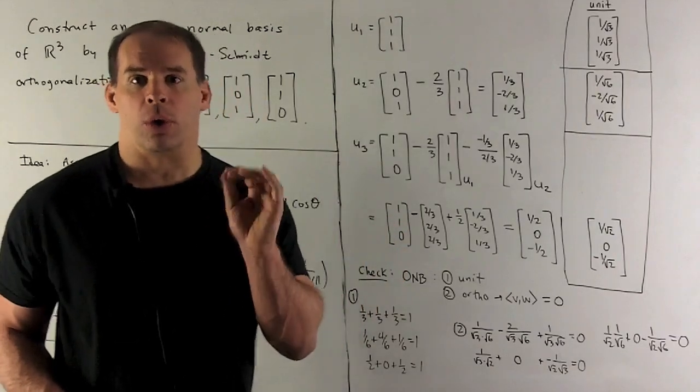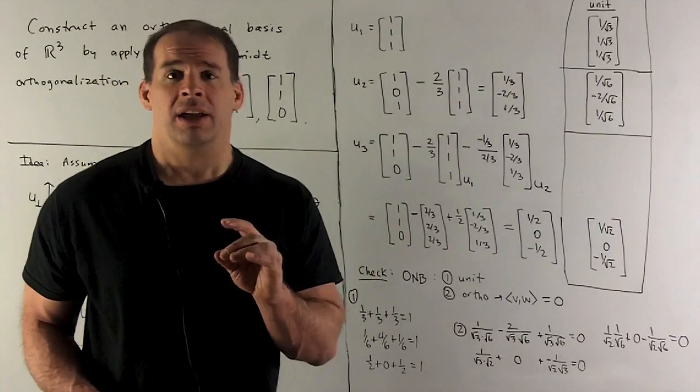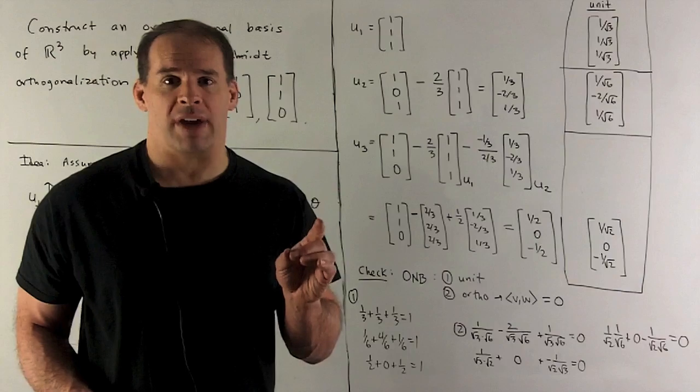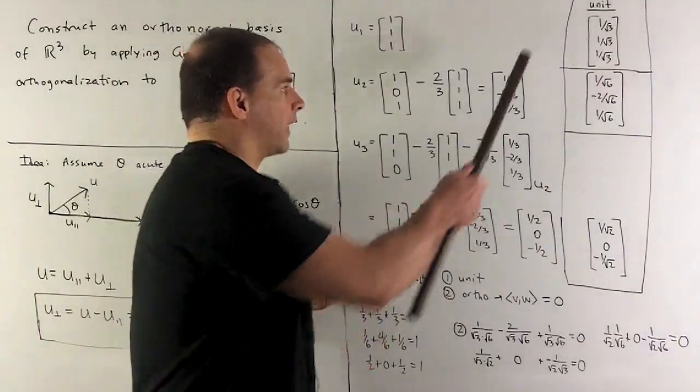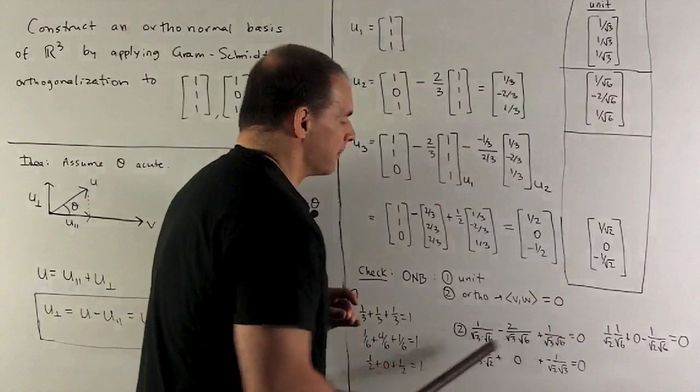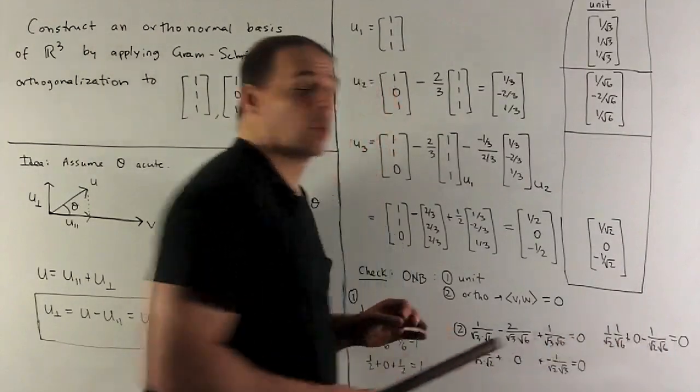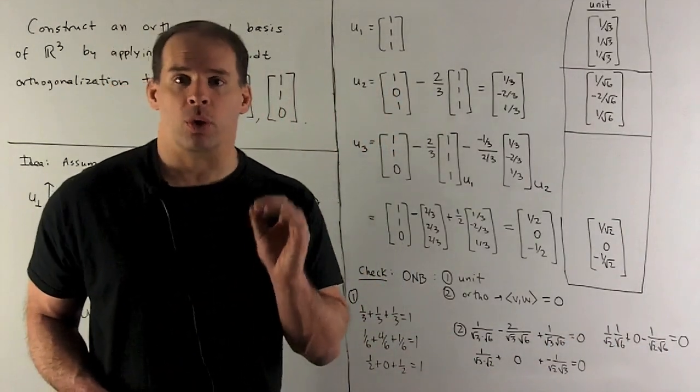Next, we need that they're orthogonal. So if I take the inner product of any two of those vectors, we have to get a 0. So if you work that out, there's going to be three of these. You'll see that the check works out. So we have an orthonormal basis.